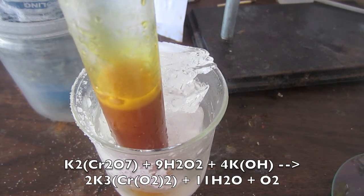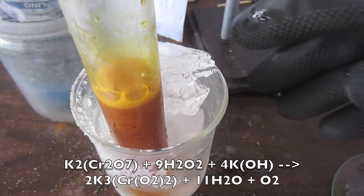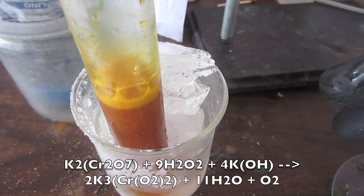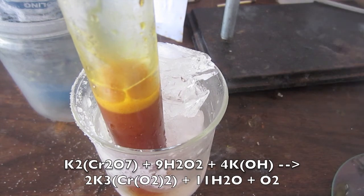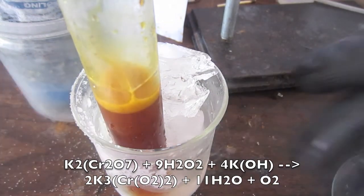So now you see that the solution is turning kind of a dark brown, which is showing that potassium tetraperoxyl chromate is being formed. The bubbles you see are due to oxygen being formed.